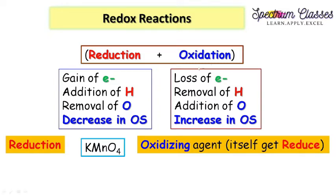Because KMnO4 gains electrons from the other reactant, that reactant loses its electrons — and if it loses electrons, that reactant gets oxidized. So oxidation of that reactant takes place just because KMnO4 gains the electrons. Therefore KMnO4 itself gets reduced — its oxidation state goes down. That is why KMnO4 is called an oxidizing agent even though it itself gets reduced. I will explain this in more detail in the next slide.